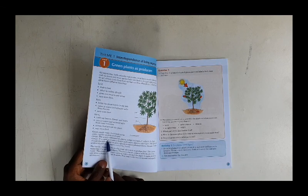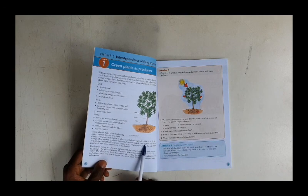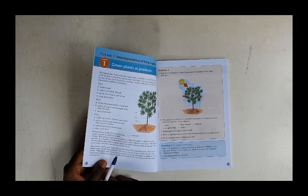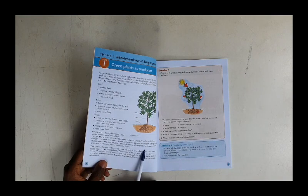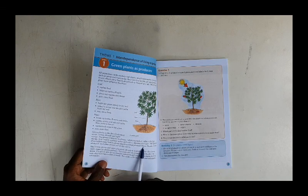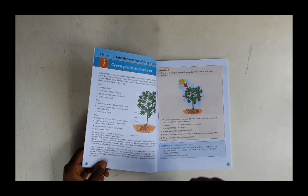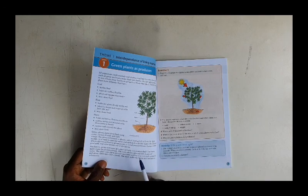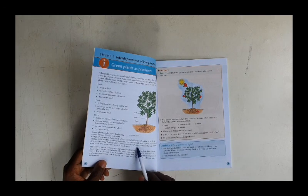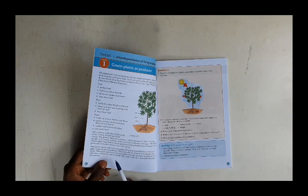It is used to combine water and carbon dioxide into sugar. This process of manufacturing food by green plants is called photosynthesis. Now photosynthesis is the process in which green plants manufacture their own food. Don't forget, take note of this definition of photosynthesis.